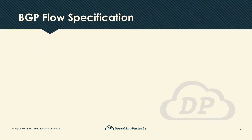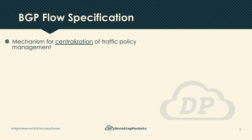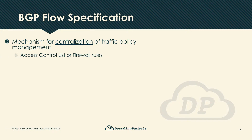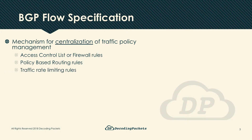At an extremely high level, BGP flow spec can be described as a mechanism that allows for centralized traffic policy control. The types of traffic policies being controlled include router ACLs or firewall rules, policy-based routing where certain packets receive treatment differing from the routing table, limiting the rate of certain traffic, or changing the QoS markings of certain packets.